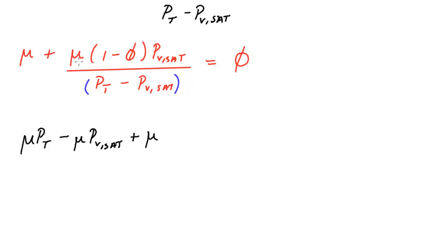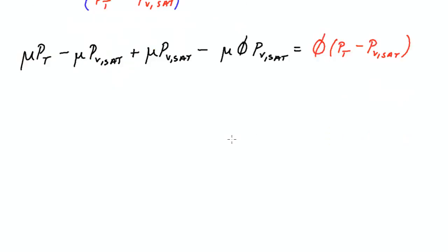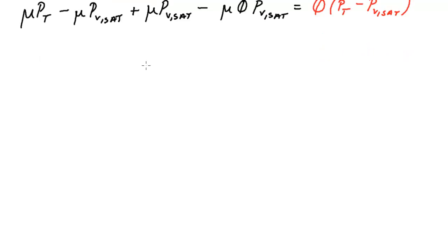So we have mu times total pressure minus mu times PV sat. And actually let me distribute this as well. So we would have mu times 1 times PV sat, and we'd also have mu times negative phi times PV sat. So that actually becomes a subtraction. We'll have mu phi PV sat. And that is all equal to phi times that bottom of the fraction. So now we have this all on one line. One thing you'll notice right away is that this term and this term cancel out. We had a positive mu PV sat and a negative mu PV sat. So all we're left with is this mu term on this side.